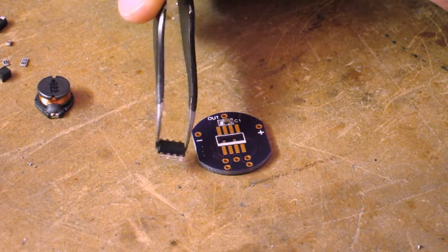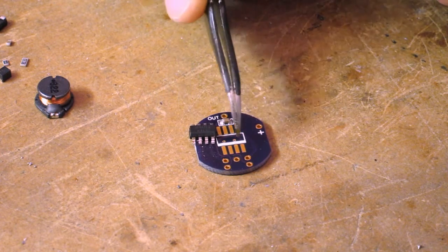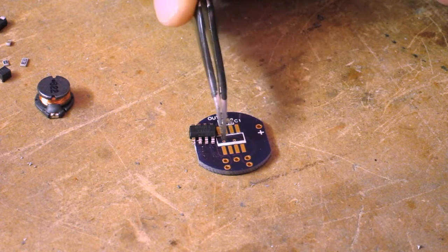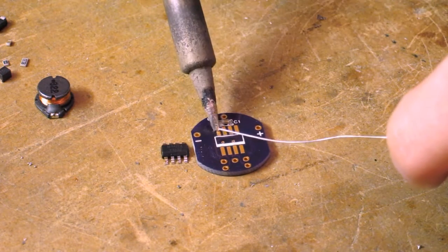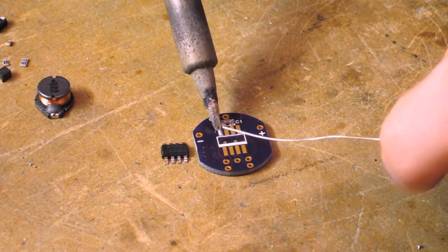Next, solder the transistor that comes in the 8-pin package. Be very careful to line up the beveled edge of the package with the white line on the silk screen.